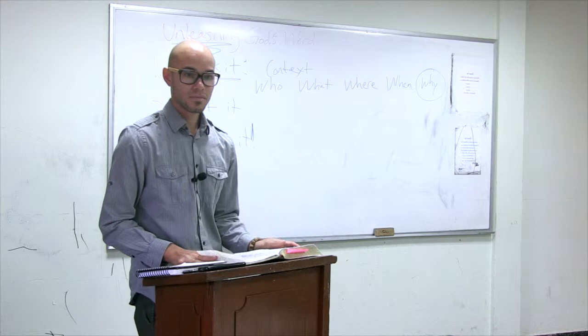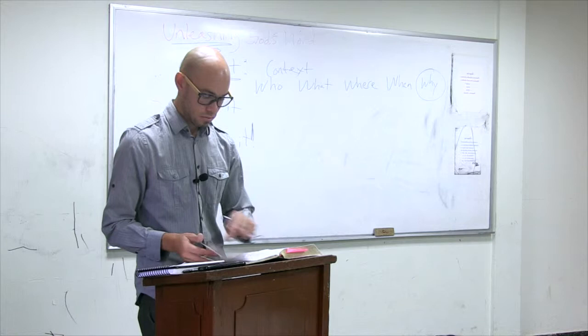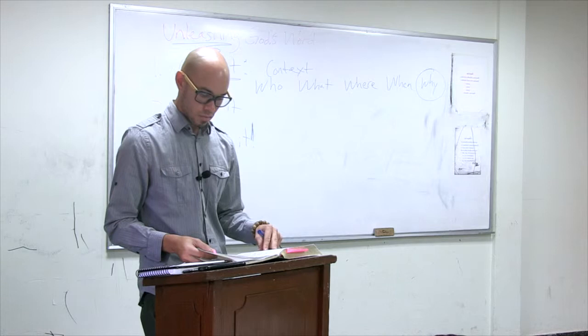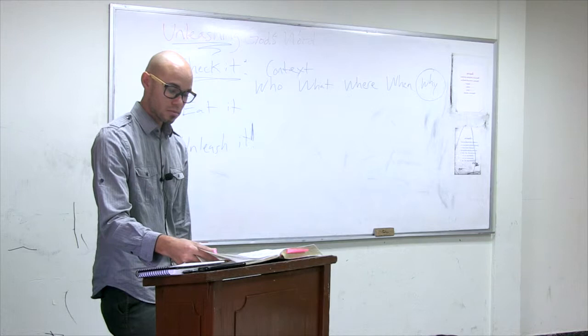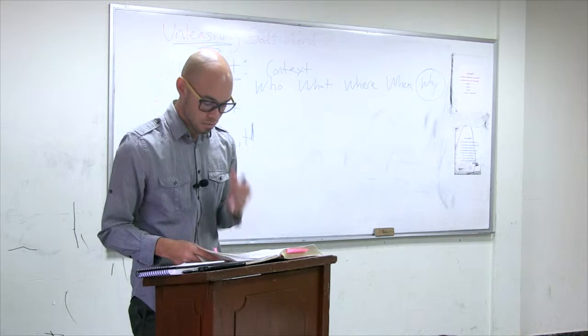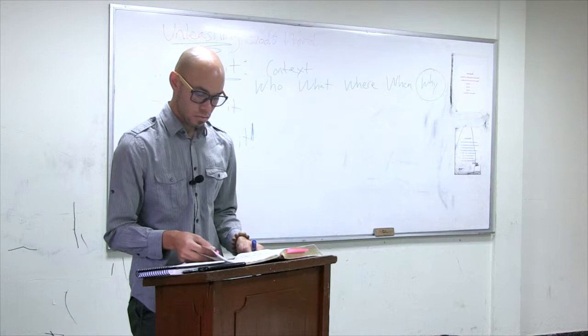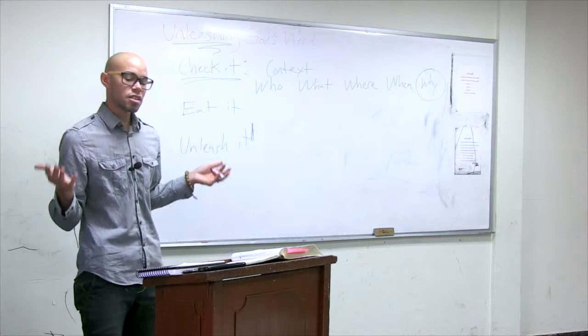In verse 1 it says, Paul an apostle of Christ Jesus by God's will for the promise of life in Christ Jesus, verse 2, to Timothy. So it doesn't take a super detective. You don't have to be an agent of SHIELD to figure out that this is a letter from Paul to a guy Timothy, basically. Go over to Colossians chapter 1. Can someone read verses 1 and 2 there? Paul an apostle of Christ Jesus by the Lord of God and Timothy our brother to the saints and faithful brothers in Christ at Colossae. Very good.